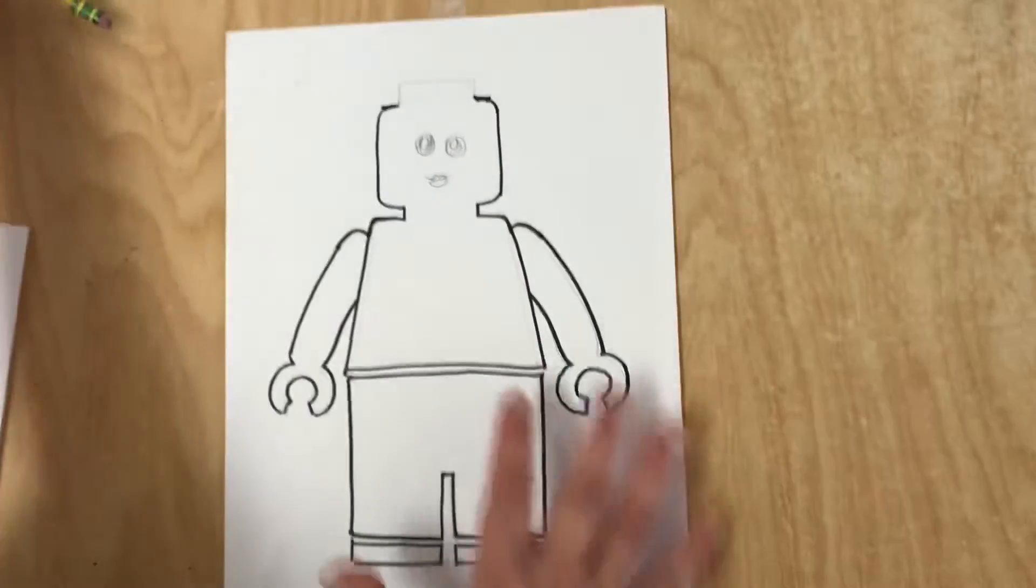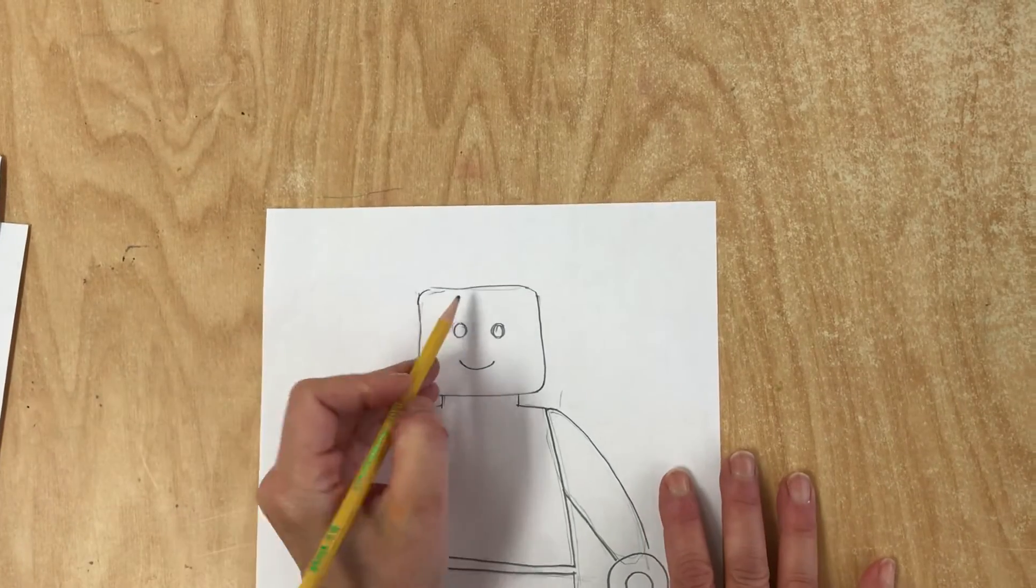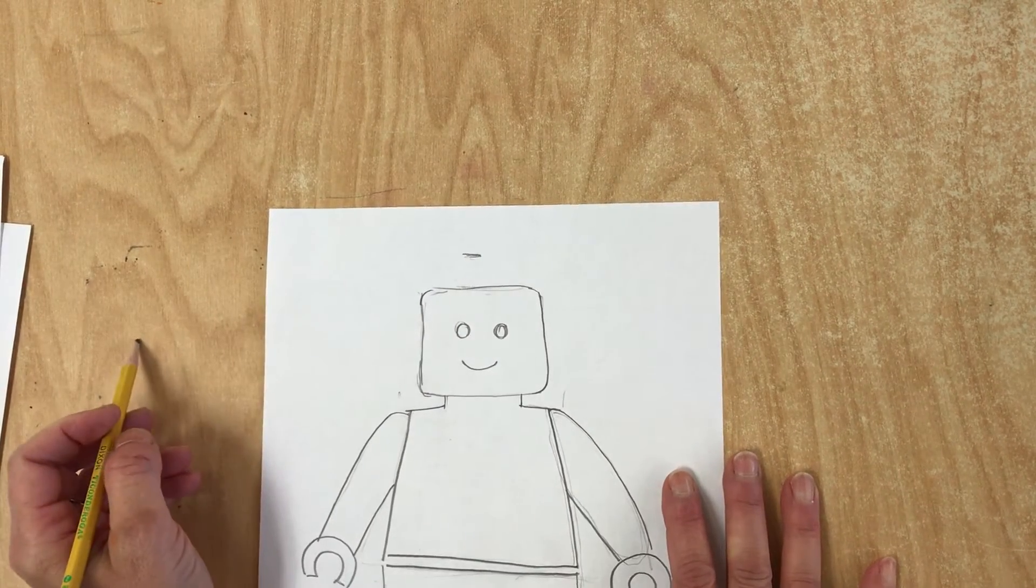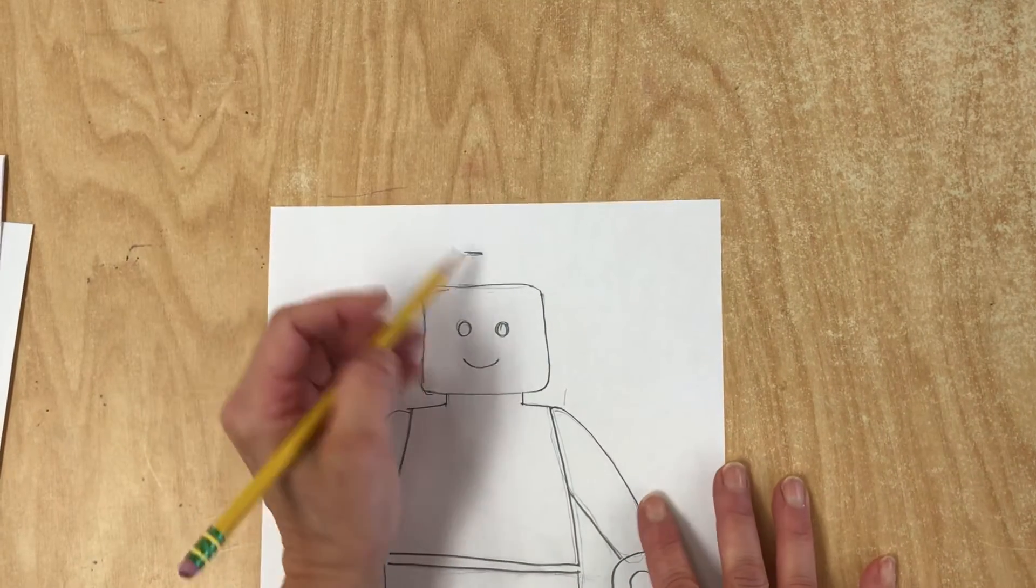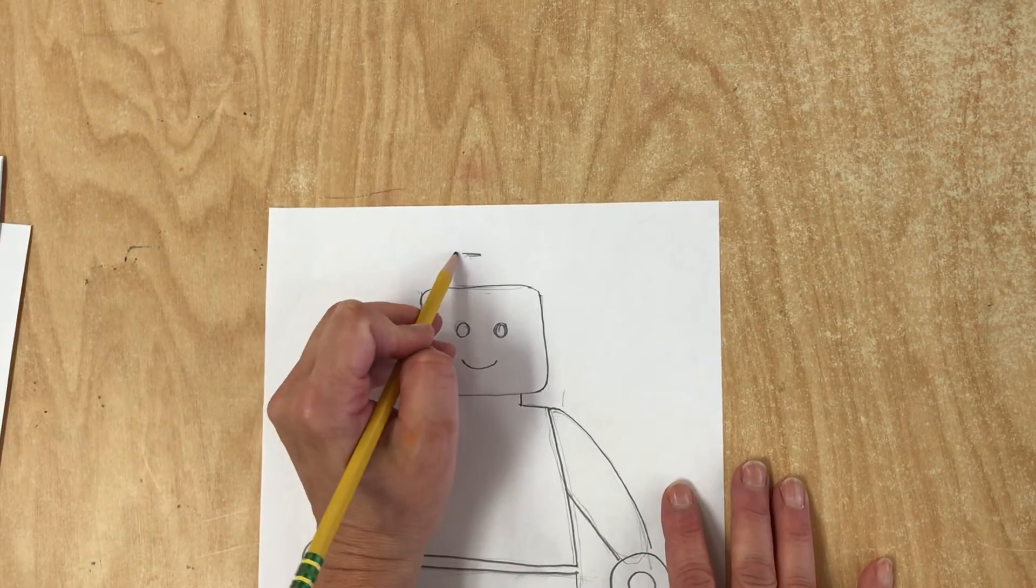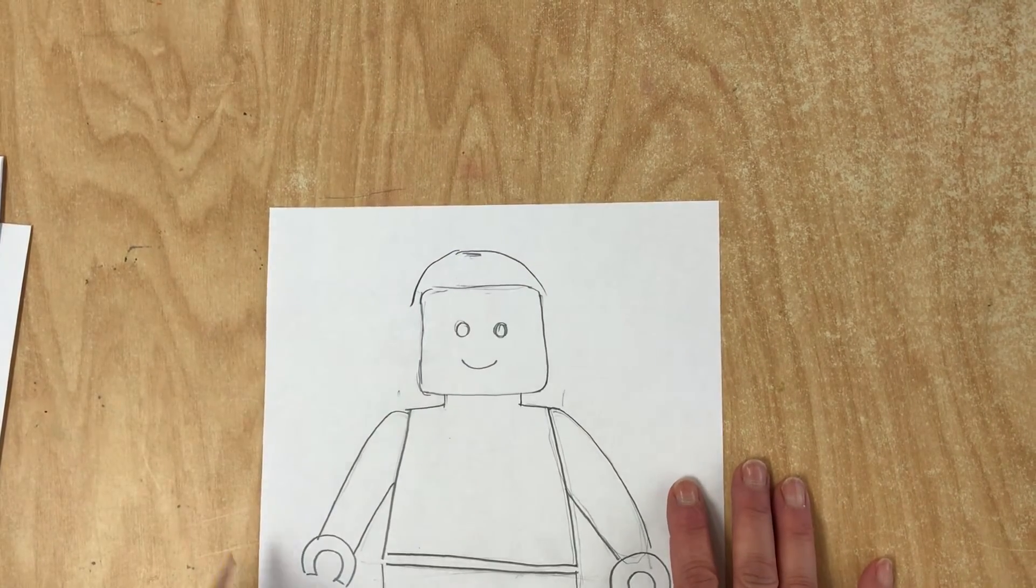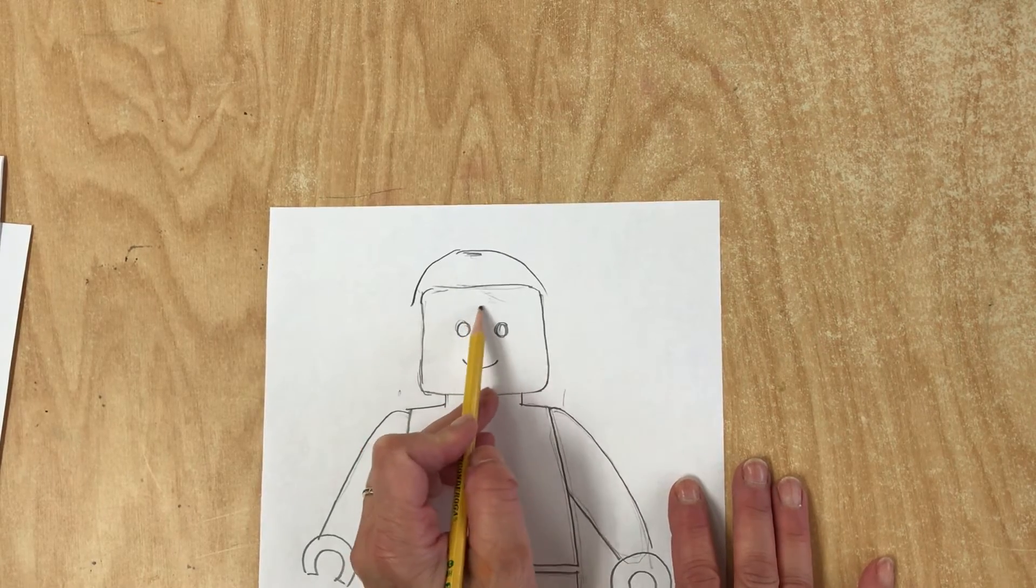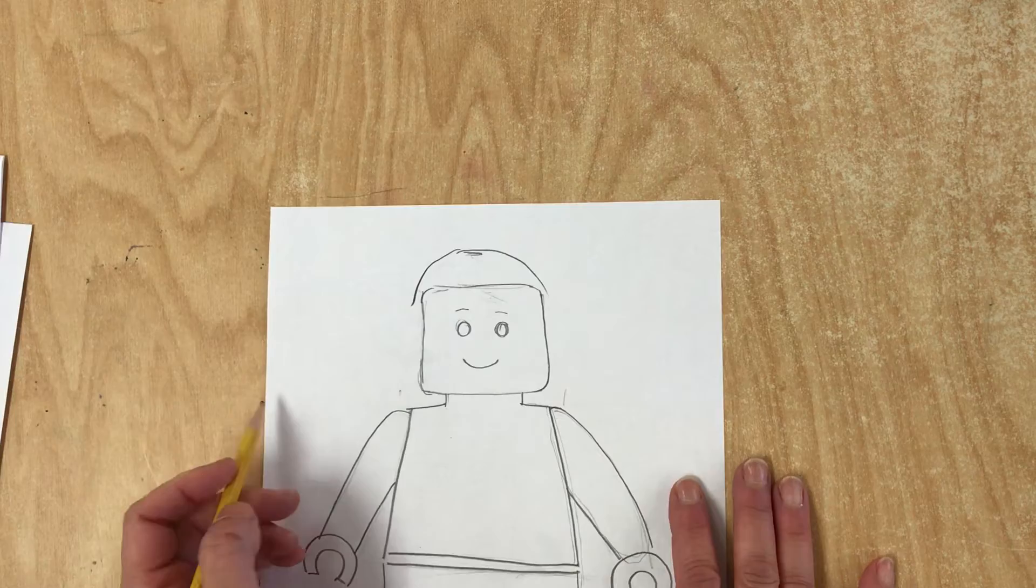But the hair is important because it doesn't just come from here. You have to go up. By the way, you should start a little down. And then a curved line, no matter what kind of hair you have. And also under here, the hair goes to where your eyebrows are, just about.